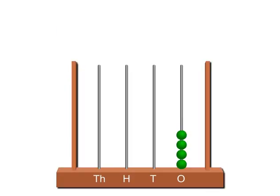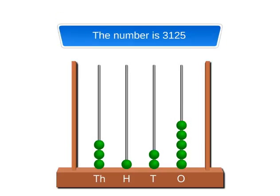Similarly, 5 beads are shown on the ones spike, 2 beads are shown on the tens spike, 1 bead is shown on the hundreds spike, and 3 beads are shown on the thousands spike. So the number is 3,125.